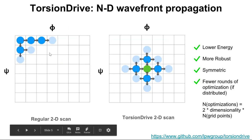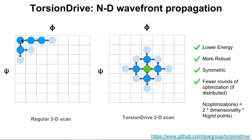This figure illustrates the difference between what I'd call a unidirectional scan of constrained minimizations and wavefront propagation. Imagine you have a starting geometry at a corner of the grid and want to generate a 2D grid of minimized structures. In the unidirectional approach, you pick a leading and trailing dimension, optimize along leading values while keeping the other constrained, then start new optimizations in the trailing dimension.